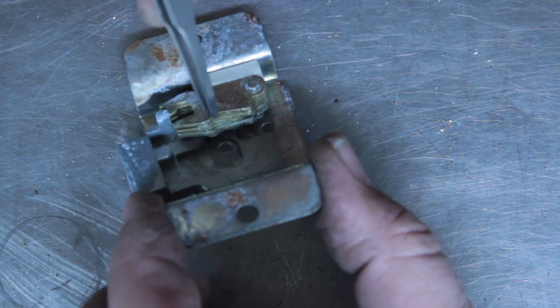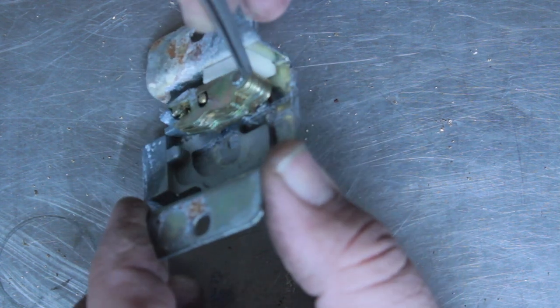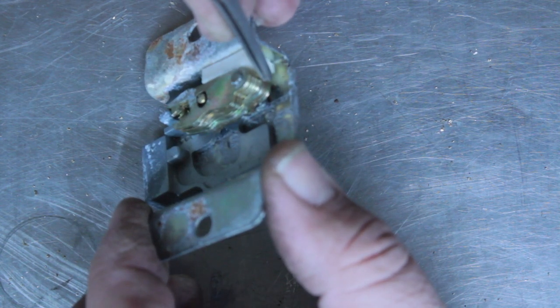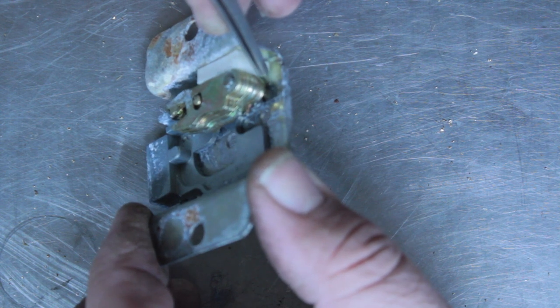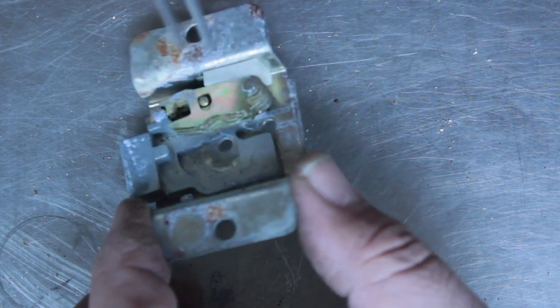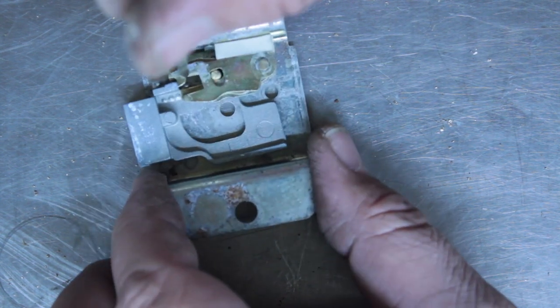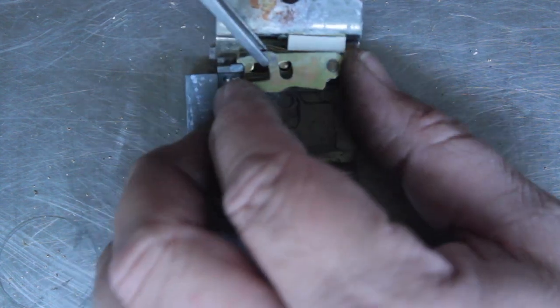Because there's one, two... Let's count them. One, two, three, four, five, seven. One, two, three, four, five, six, seven. Yeah, seven little levers that need to be lined up for this lock to work.